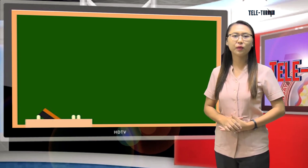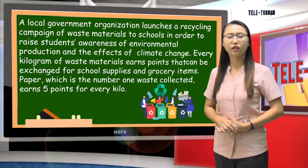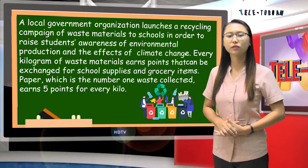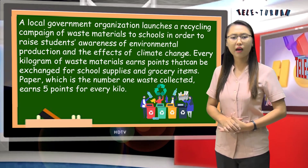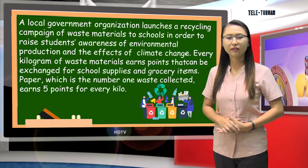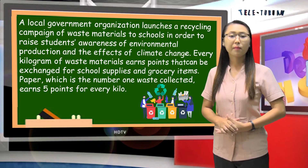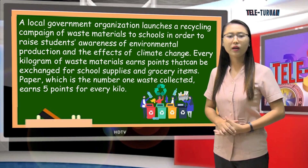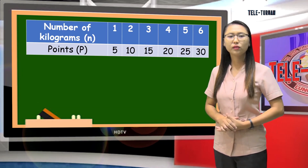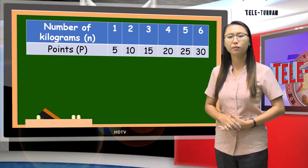Let us start our discussion with this situation. A local government organization launches a recycling campaign of waste materials to schools in order to raise students' awareness of environmental protection and the effects of climate change. Every kilogram of waste materials earns points that can be exchanged for school supplies and grocery items. Paper, which is the number one waste collected, earns five points for every kilo. This table shows the points earned by grade 9 class for every number of kilograms of waste paper collected.